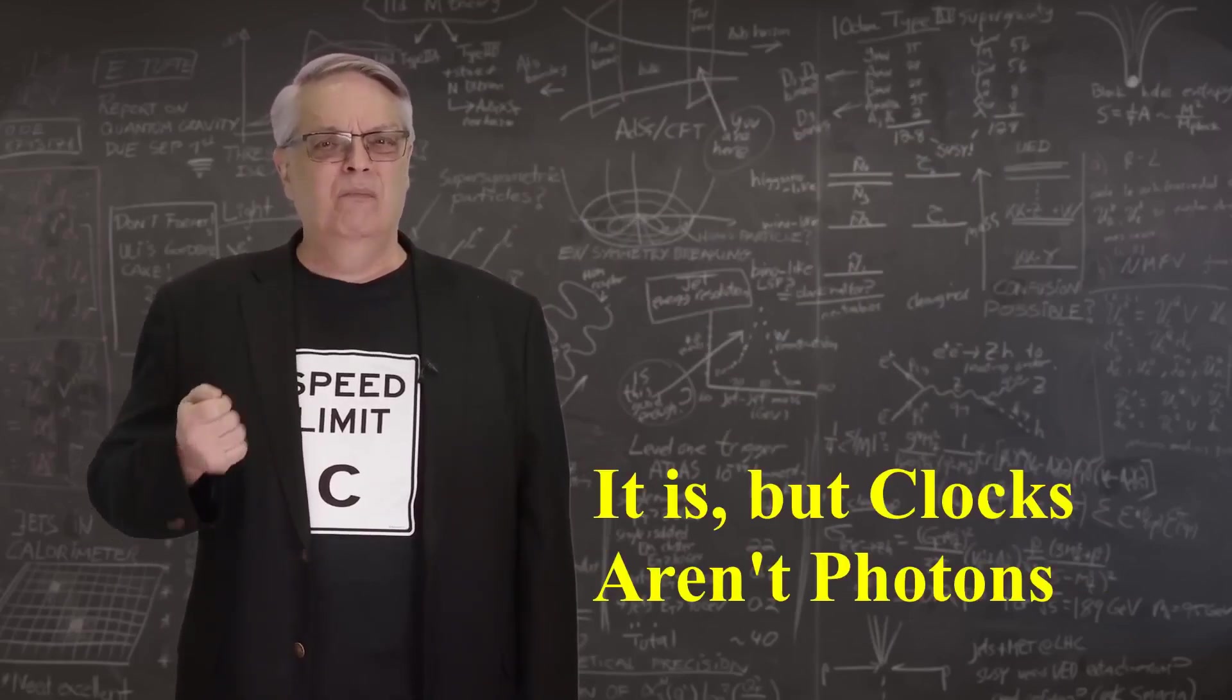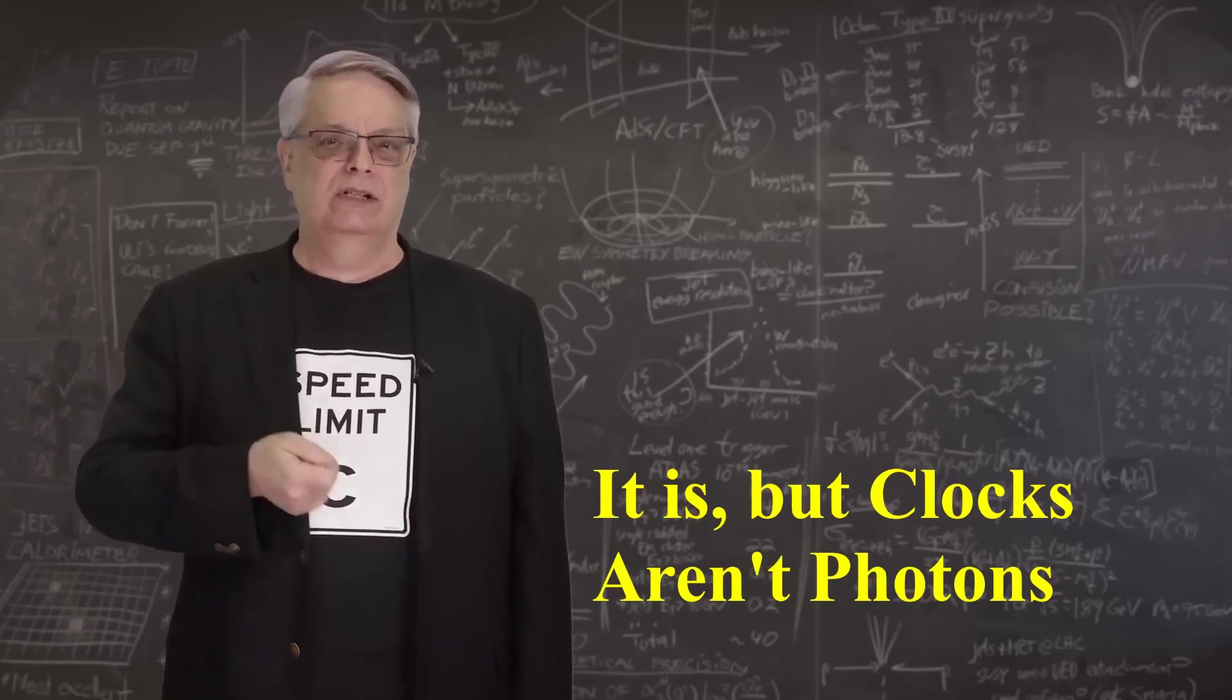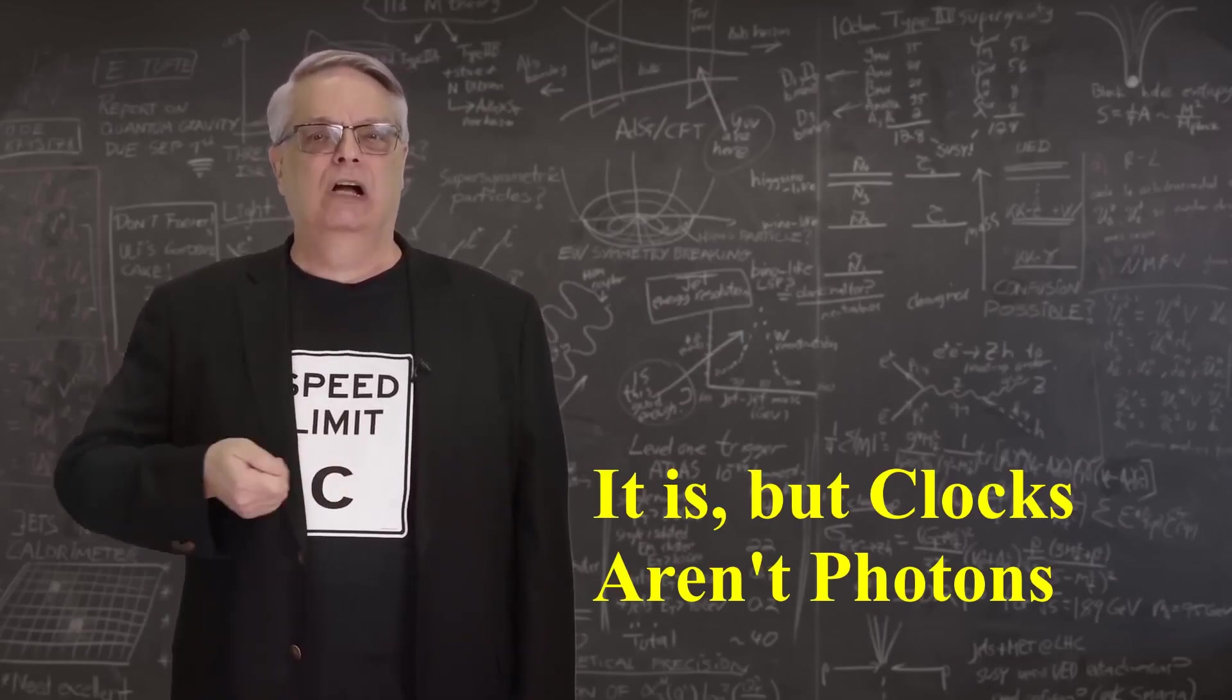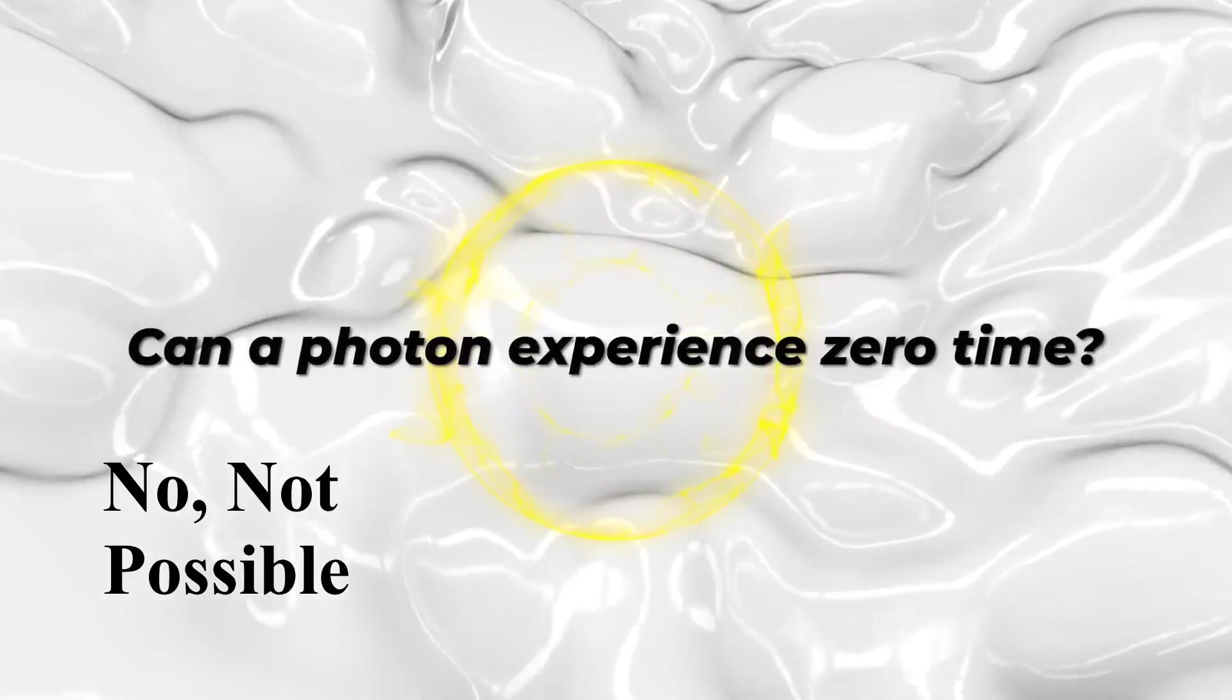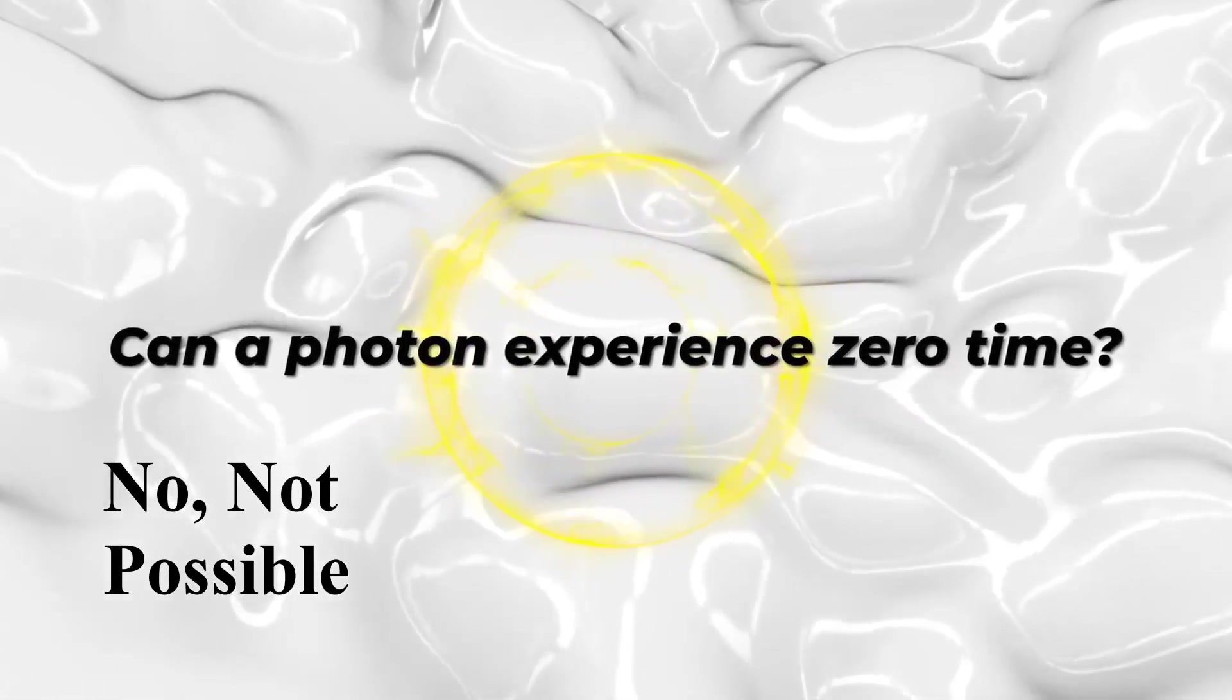If it's true that a moving clock ticks more slowly than a stationary one and a photon moves at the speed of light, is it possible that the photon is moving so fast that no time is experienced?